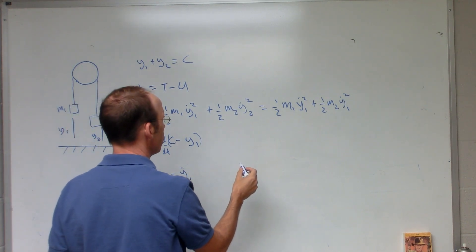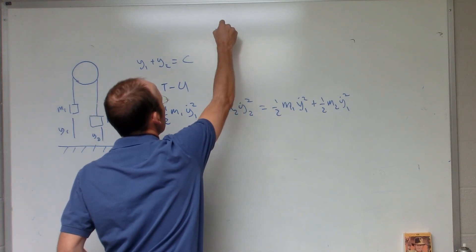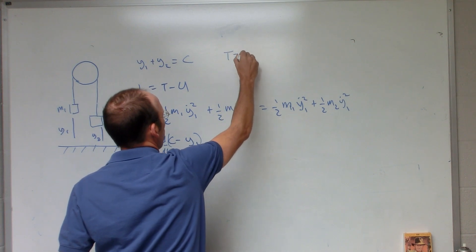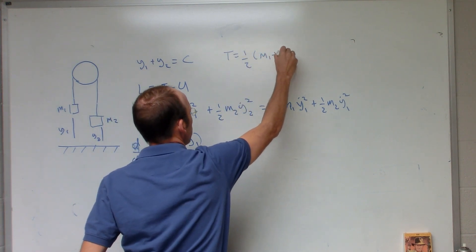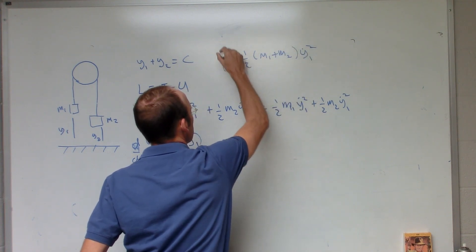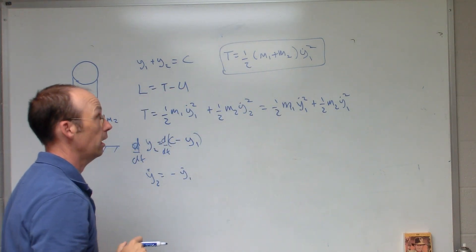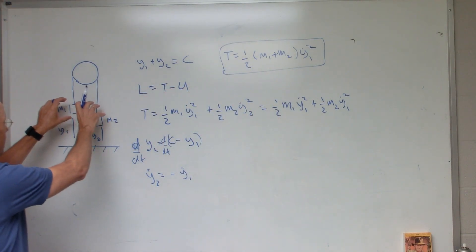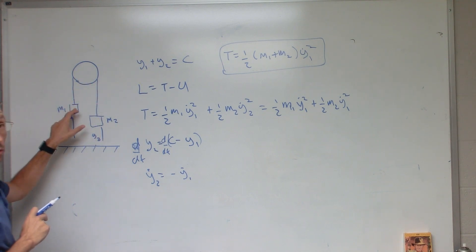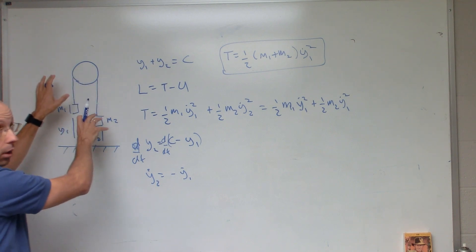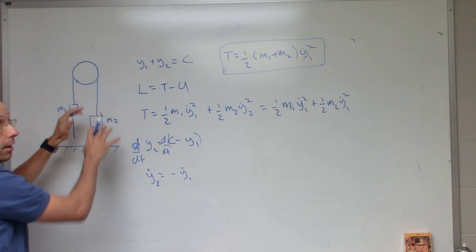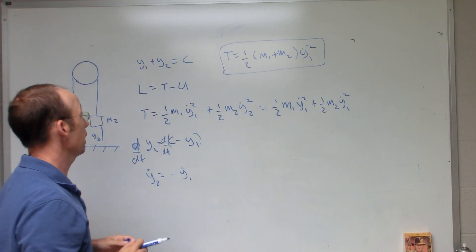So really the kinetic energy is equal to, I'll write it up here, T equals one half M1 plus M2 Y1 dot squared. And let's think about it. These things are tied together. So whatever the speed of this one has to be, it would have to be that one too. And so really they're moving together. So the kinetic energy, I can think of it as the total mass times the velocity squared. And that's exactly what I have right there. So that's the kinetic energy.